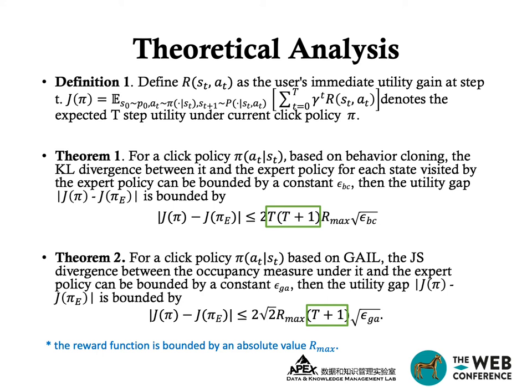We then analyze how exposure bias is reduced theoretically. We define J(π) as the expected k-step utility of the user under the current click policy, and analyze the utility gap of the traditional supervised method versus our method. From Theorem 1 and Theorem 2, the utility gap is significantly reduced from quadratic to linear in step size T.